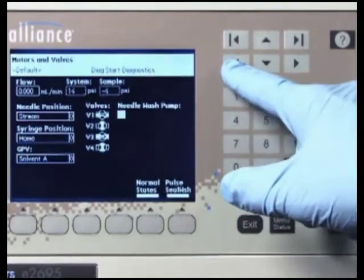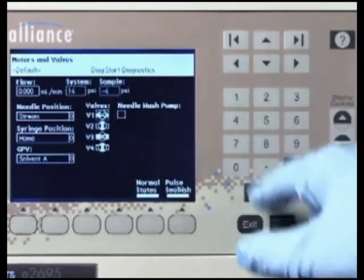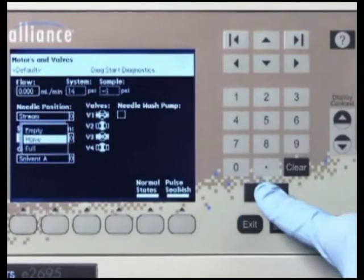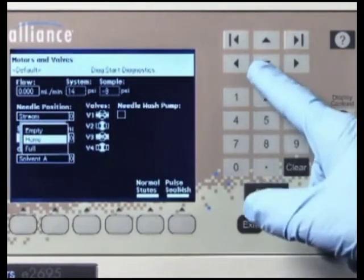Select the syringe position field. Press enter to display the drop-down list. Select the full field.